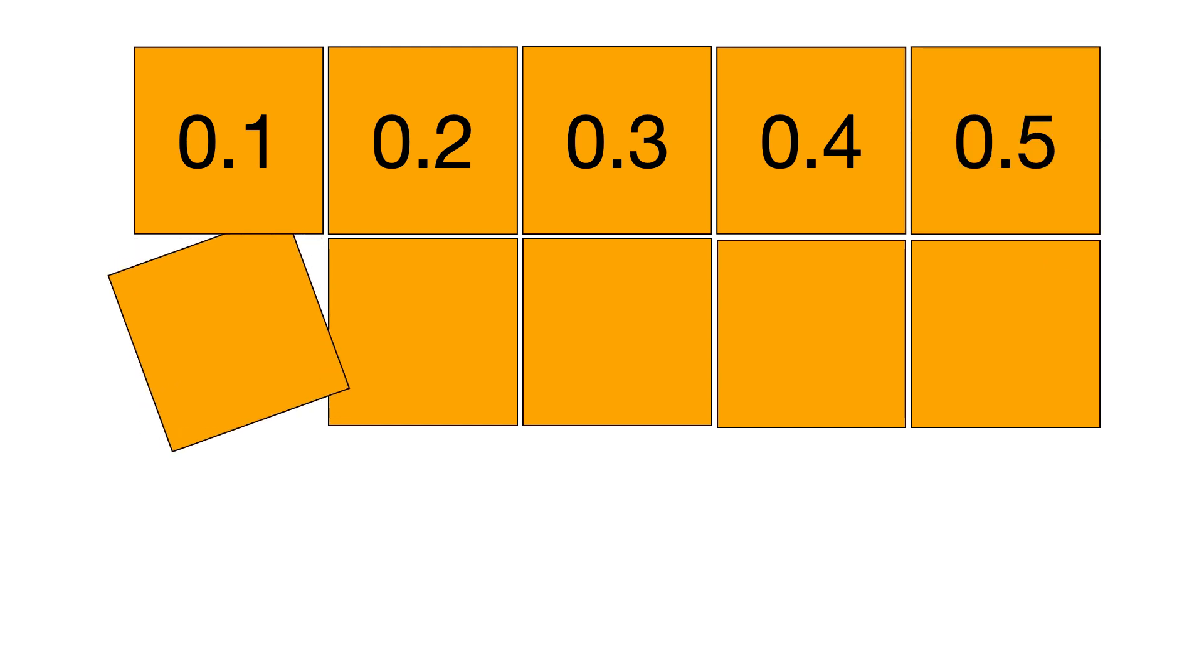Or we can write tenths as decimals like this. 0.1, 0.2, 0.3, 0.4, 0.5 and so on, all the way up to 0.9 and one whole.